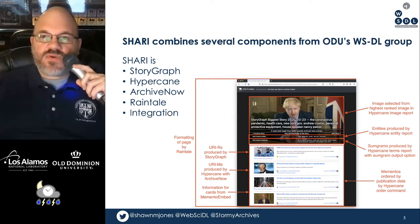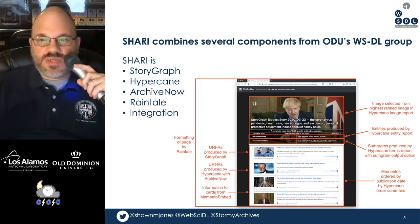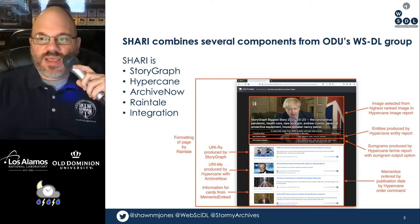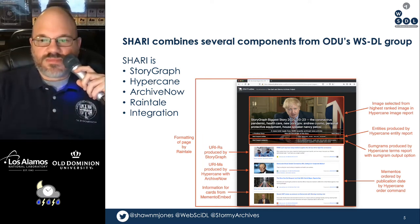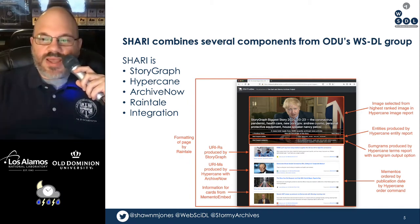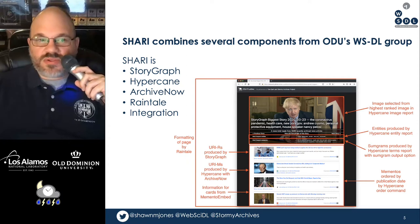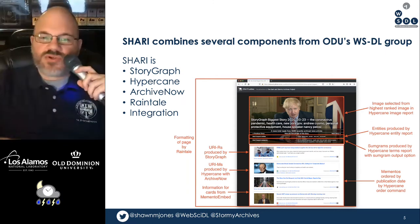Sherry combined several components from ODU's WSDL group — it is a Storygraph, Hypercane, ArchiveNow, RainTail integration. Hypercane produces an image report that gives us the striking image on the top, and also an entity report giving a list of entities. It uses sumgrams to produce a list of phrases from these articles, orders the mementos by publication date, and if no mementos are available, it creates them with ArchiveNow. The whole thing is rendered by RainTail.